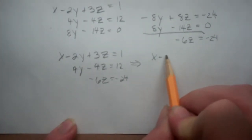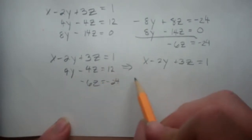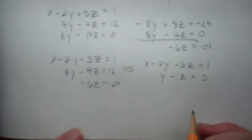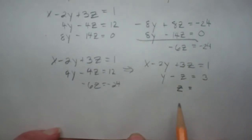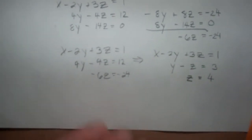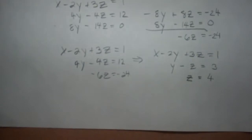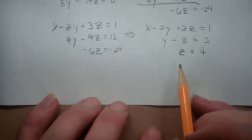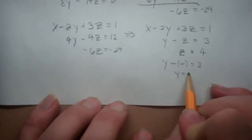So the top equation becomes x minus 2y plus 3z equals 1. Dividing the middle by 4 gives us y minus z is equal to 3. Dividing the bottom by negative 6 gives us z is equal to 4. This is a much easier system to solve than the original, and because we used Gaussian elimination, the solutions are the same as the original. Now using back substitution: since z equals 4, we substitute into y minus z equals 3 to get y minus 4 equals 3, so y is equal to 7.